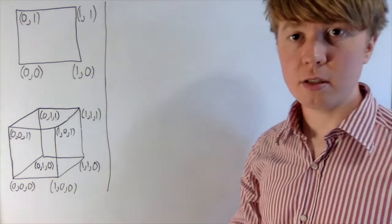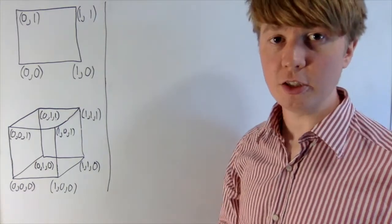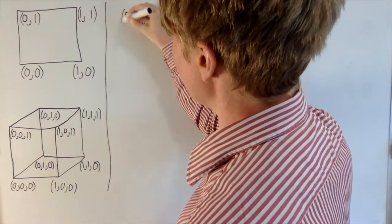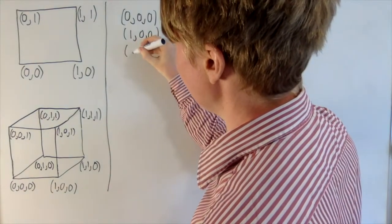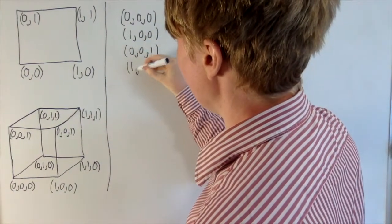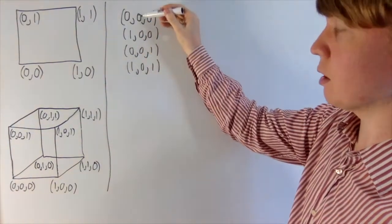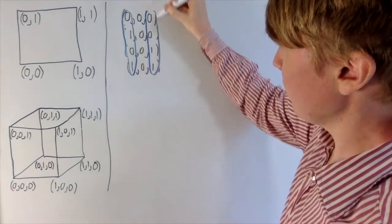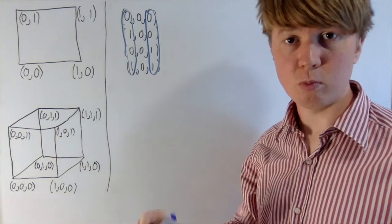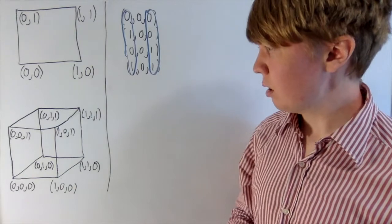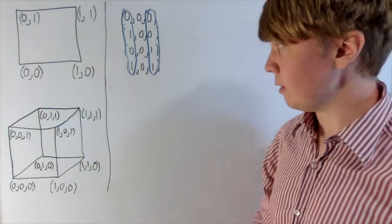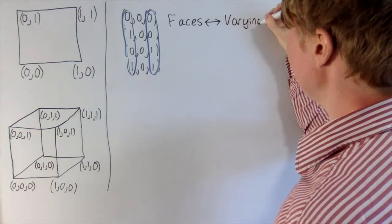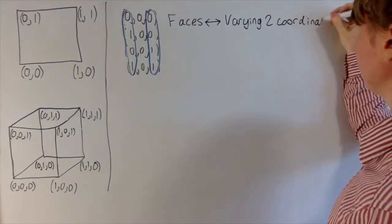Next, let's look at how many faces an n-dimensional hypercube has. Looking at the front face of the 3D cube — which contains (0,0,0), (1,0,0), (0,0,1), and (1,0,1) — all the y entries are exactly the same (they're all 0), and we're allowed to vary our x and z entries. Where an edge corresponds to varying just one coordinate entry keeping everything else fixed, a face corresponds to varying two coordinate entries and keeping everything else fixed.